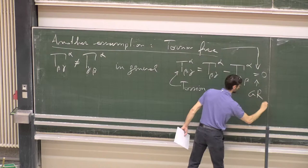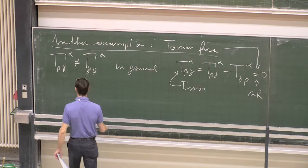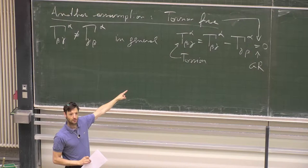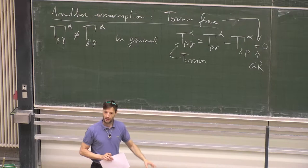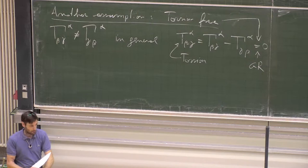In general relativity, we impose torsion to be equal to zero. Mathematically, we can have manifolds in which torsion is non-zero. You can also have theories of gravity in which torsion is different from zero, or even theories where you impose the curvature to be zero and play all the games with torsion.